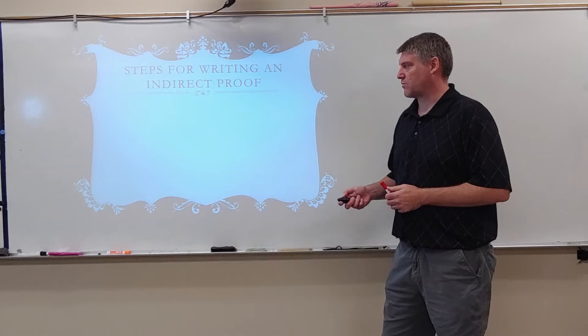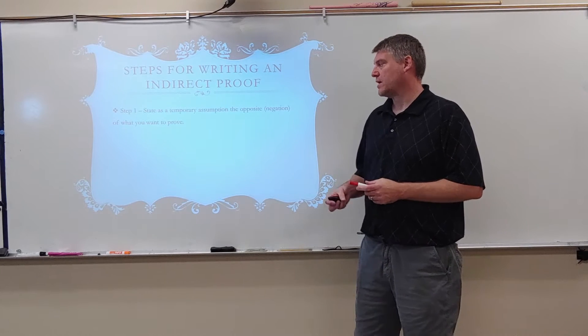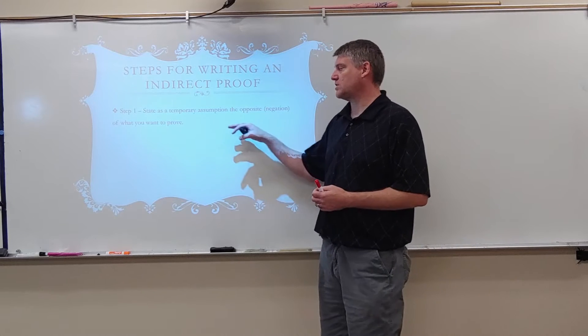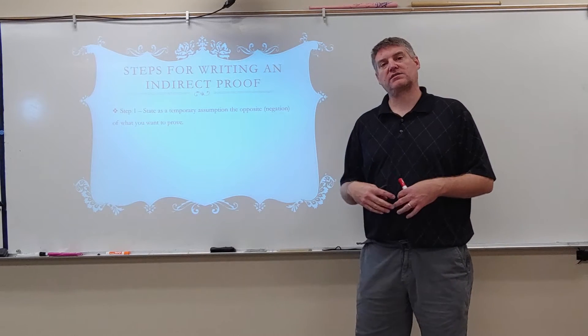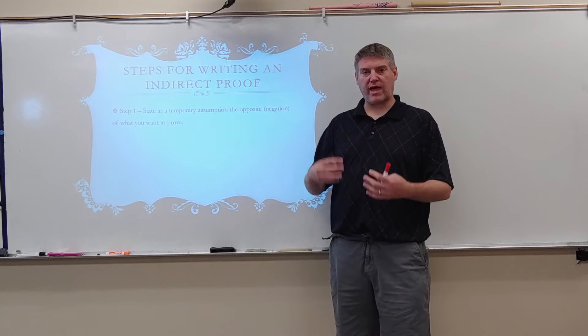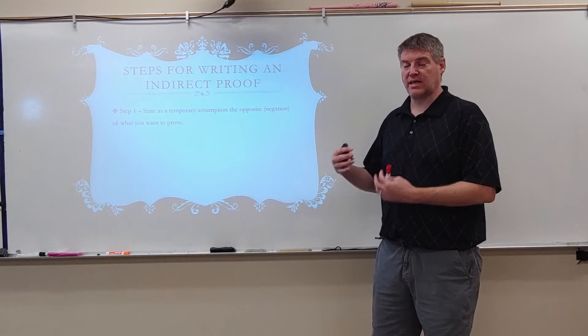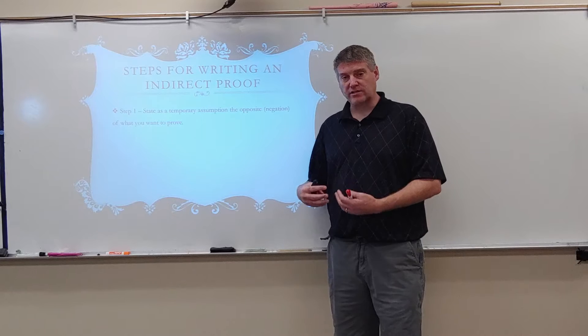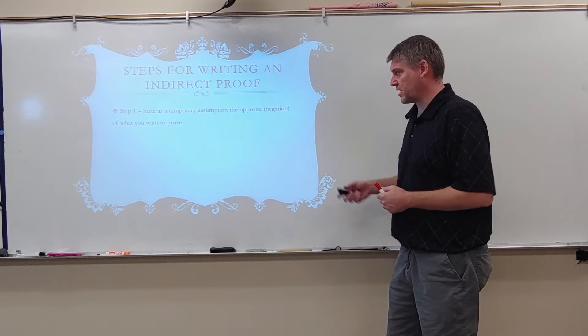Steps in writing an indirect proof. Step one, state as a temporary assumption the opposite or the negation of what you want to prove. So if I said I want to prove AG is congruent to AE, I would say AG is not congruent to AE. That's where I'm going to start.